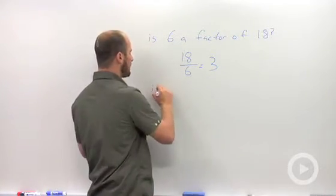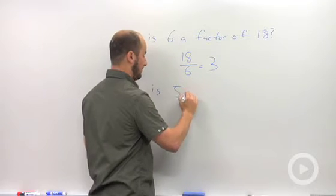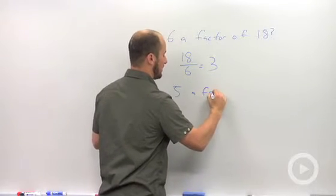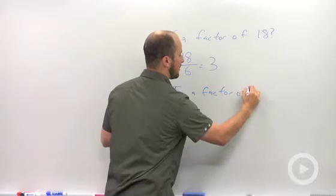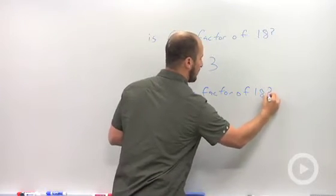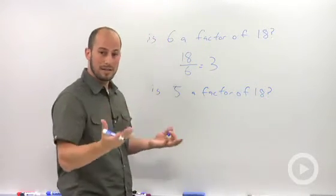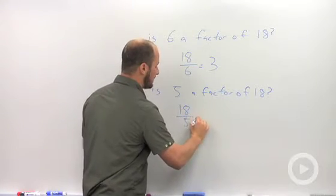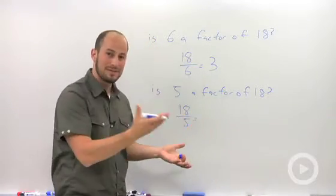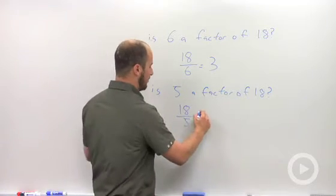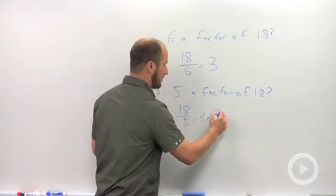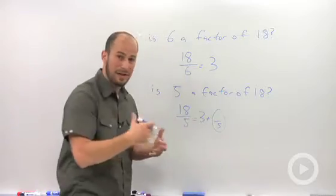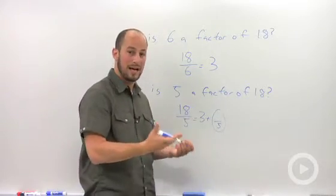If I asked you, is 5 a factor of 18? It isn't because 18 divided by 5 is not a whole number. It's equal to 3 plus a fraction. You have a remainder left over, so it doesn't in fact go in.